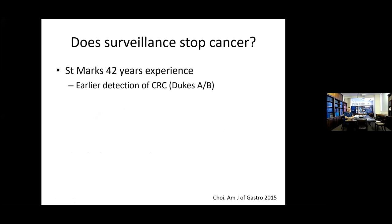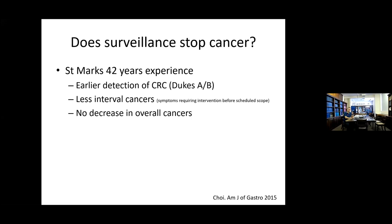So does surveillance stop cancer? In the 42 years of experience from St. Mark's, there was early detection of colorectal cancer — Duke's A and B — and less interval cancer in patients enrolled in the surveillance program, defined as symptoms requiring intervention before the next scheduled scope. But what was interesting is there was no decrease in overall cancers. There was a decrease in overall cancers in the first three decades, possibly related to improving technology, but it could also be that picking up low-grade dysplasia doesn't actually translate into decreasing overall cancers.